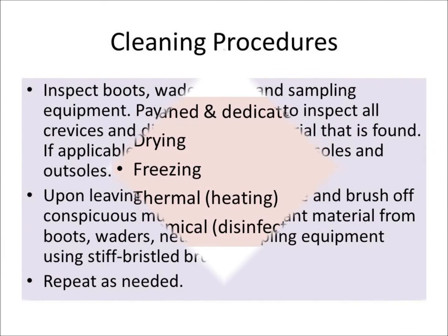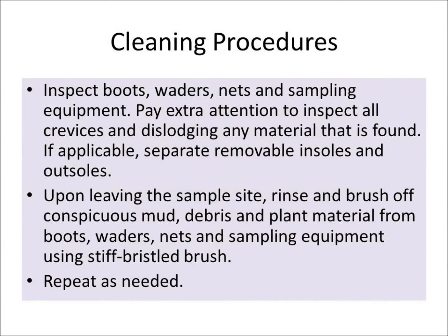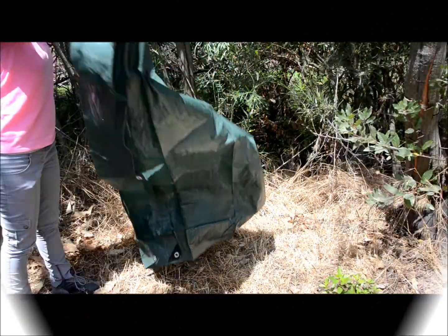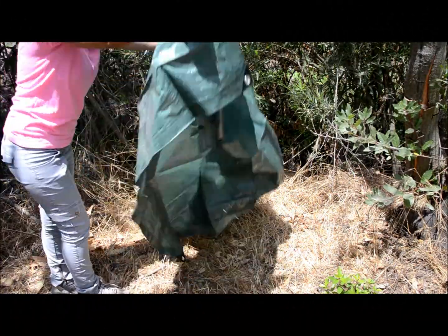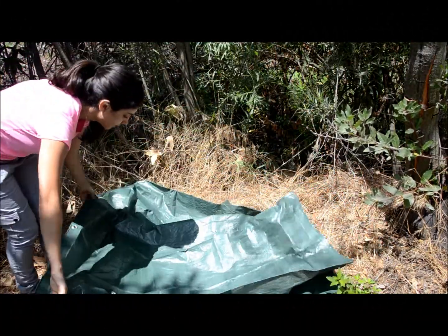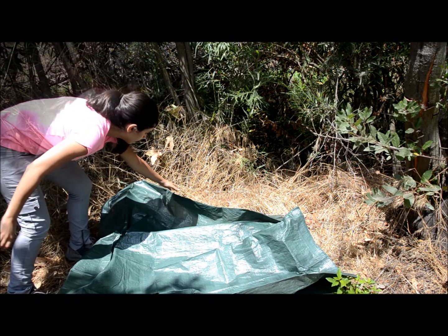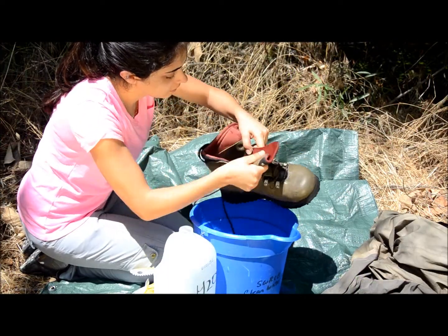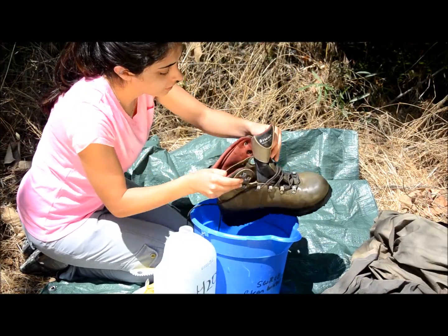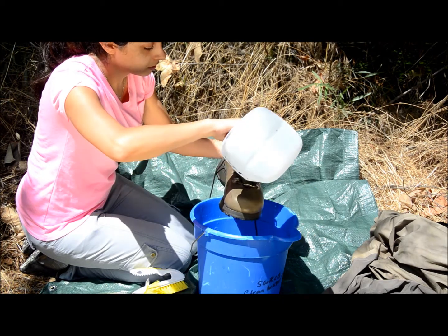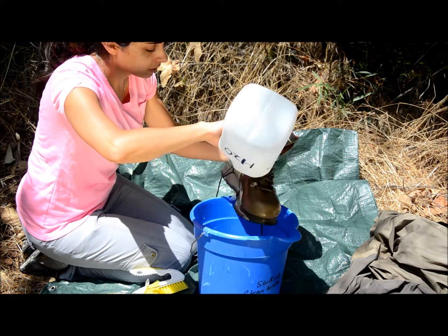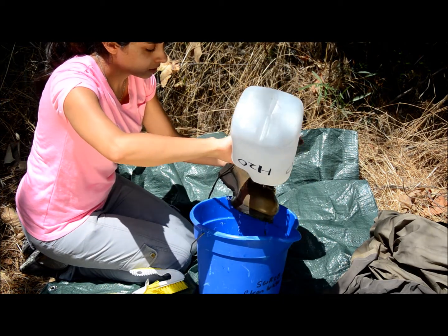To clean your gear, inspect boots, waders, nets, and sampling equipment. Pay special attention to inspect all crevices and dislodge any material that you find. If applicable, separate removable insoles and outsoles from your wading boots. You may also need to remove boot laces.